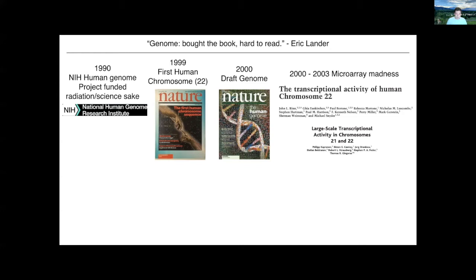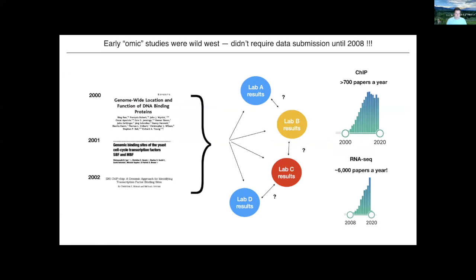But this actually became an issue — and this is how ENCODE started — because there was becoming a massive amount of data being generated from all sorts of different labs. Everybody had access to the sequence, it was an amazing time. But really what was starting to happen is people were saying none of this stuff overlaps: my data doesn't match with your data. When you look larger, the more observations you have, the more you really have to think about what you're finding and what could have been found by chance. None of these results were matching, but look how many papers were coming out — 700, 6,000 for RNA.